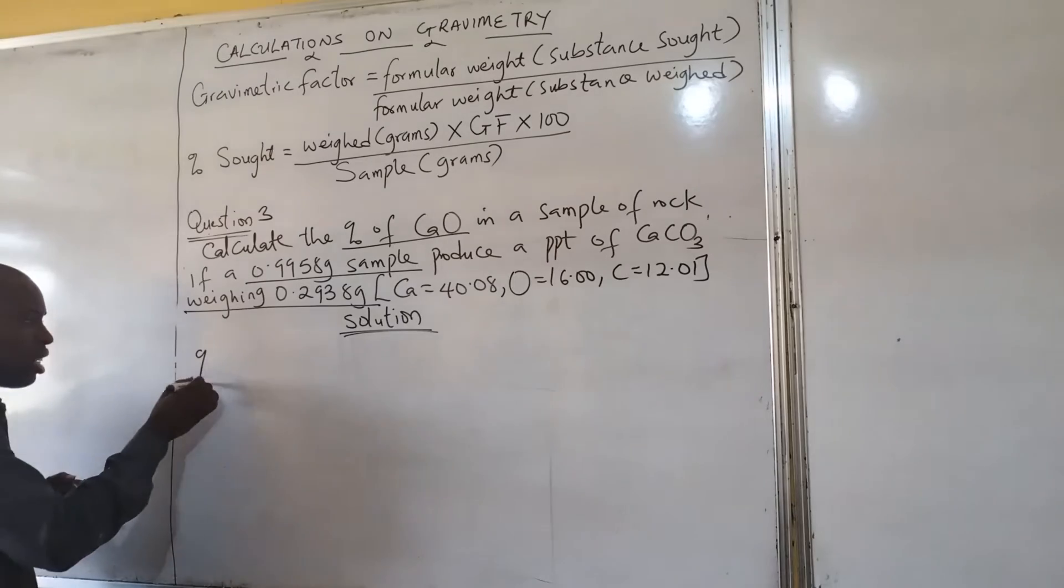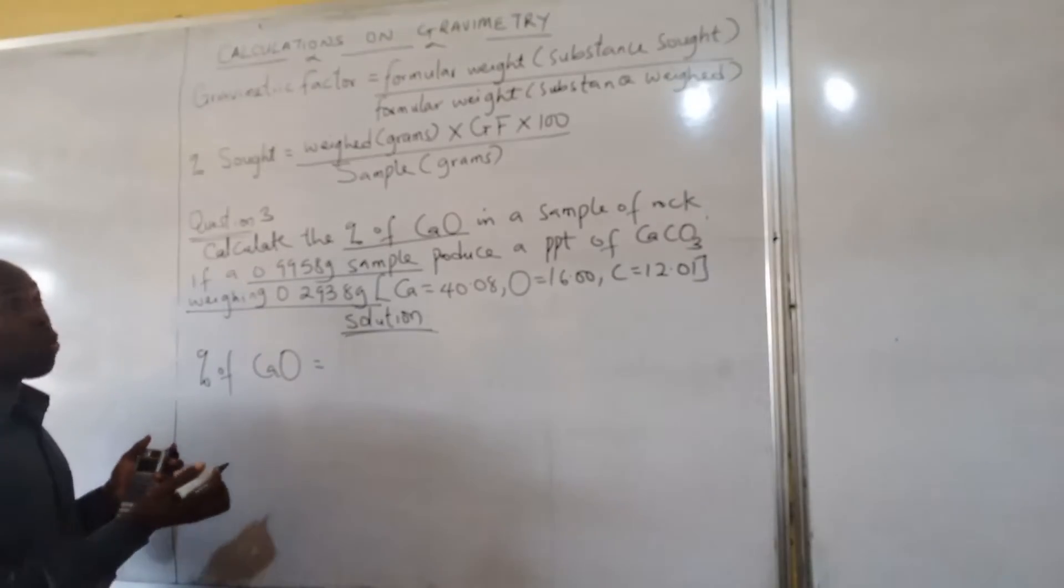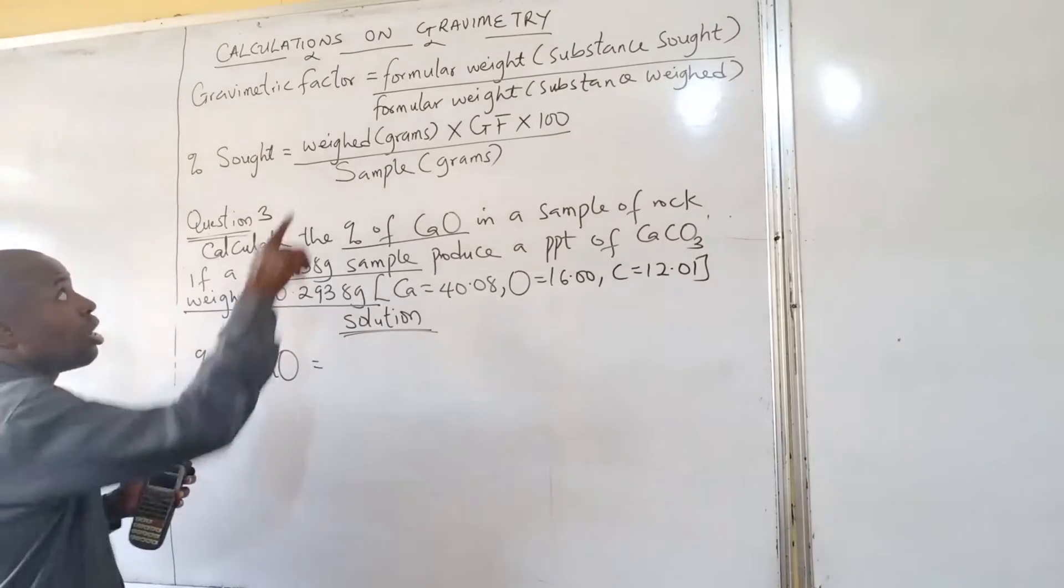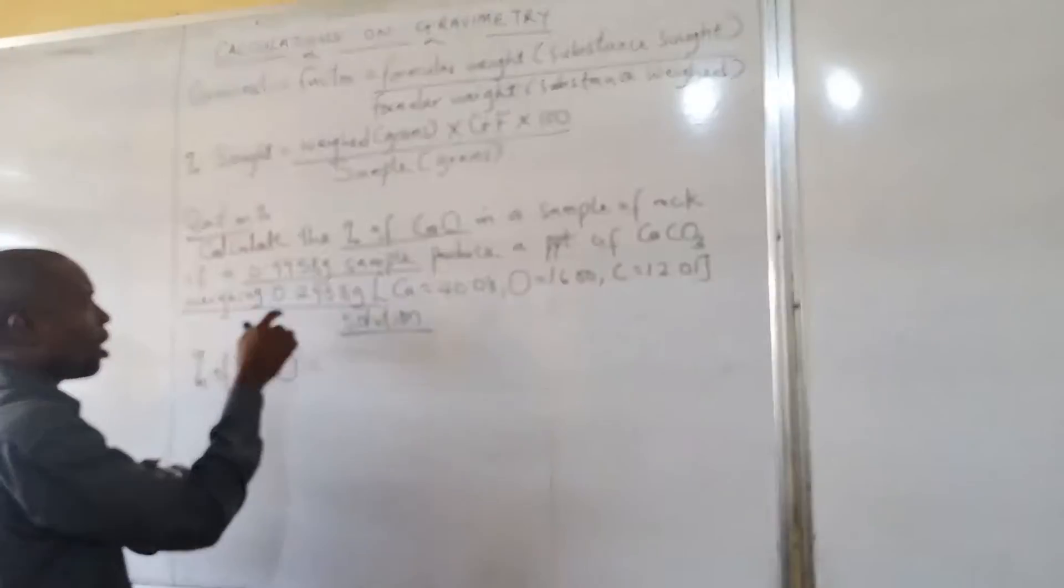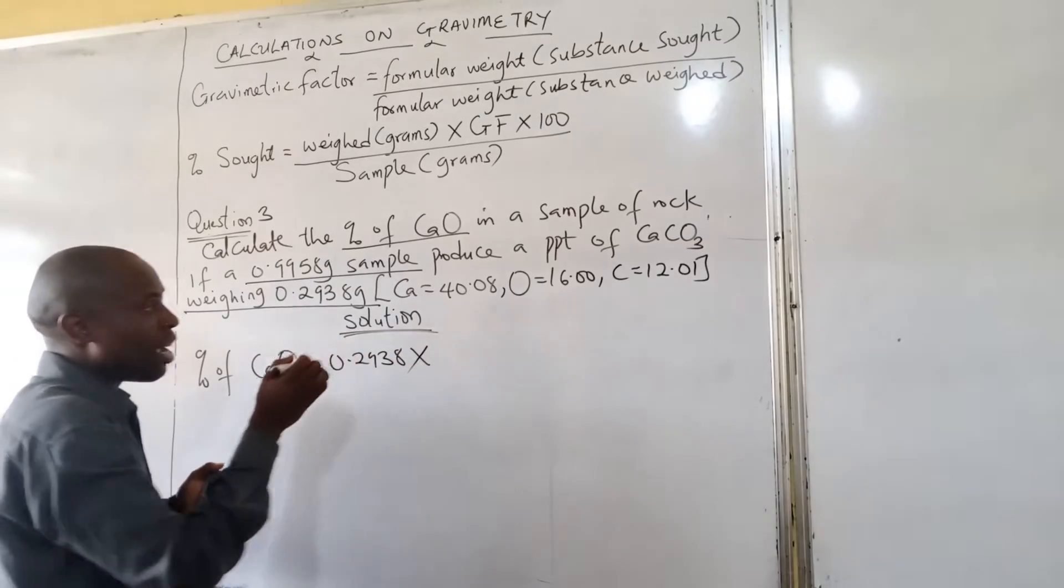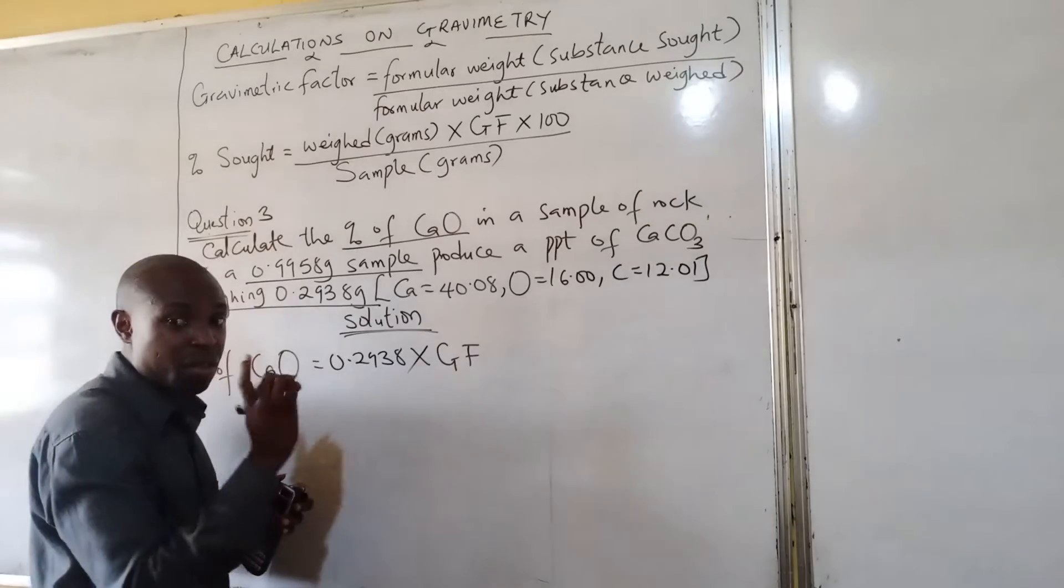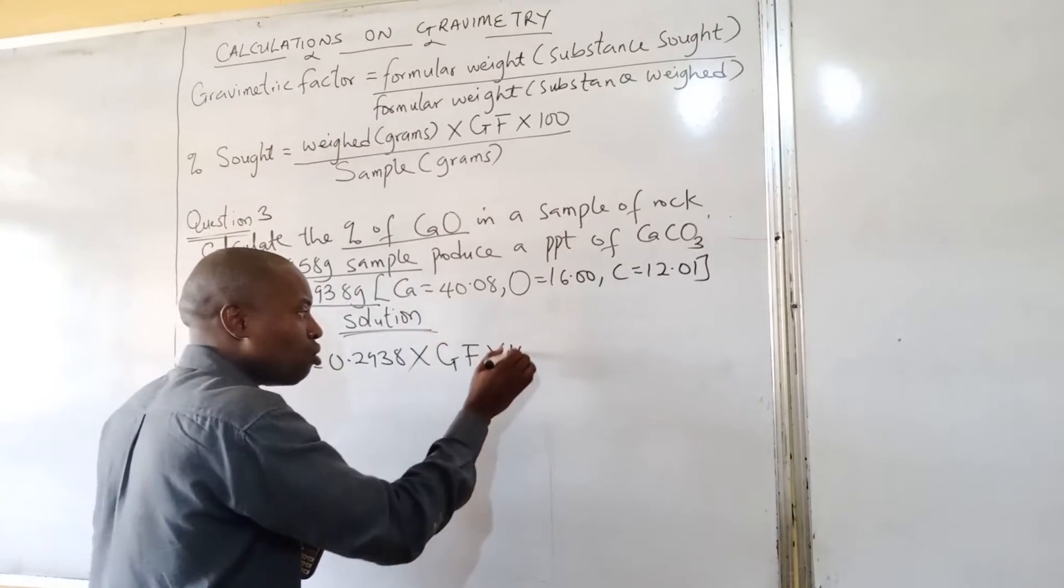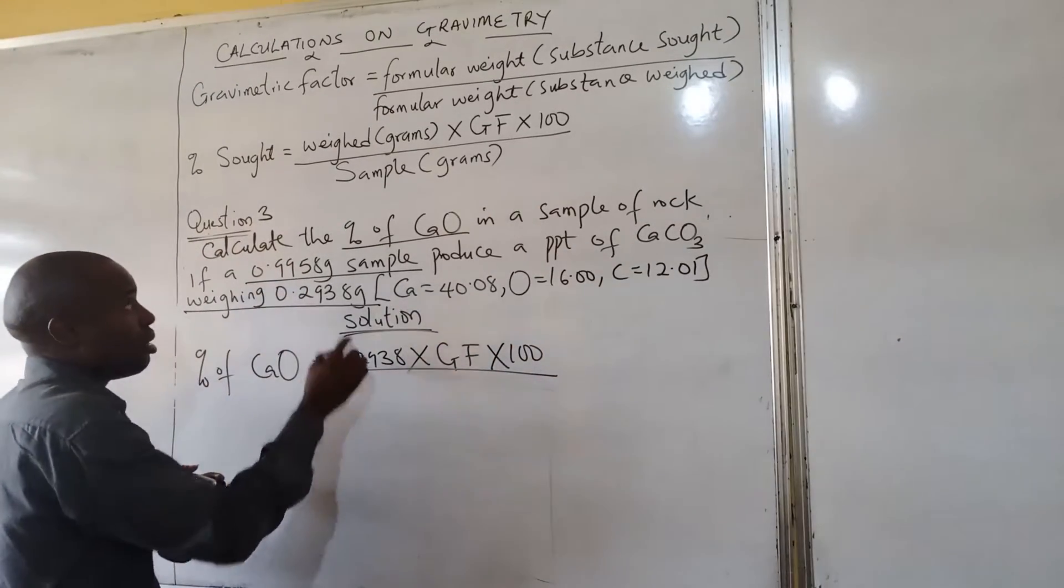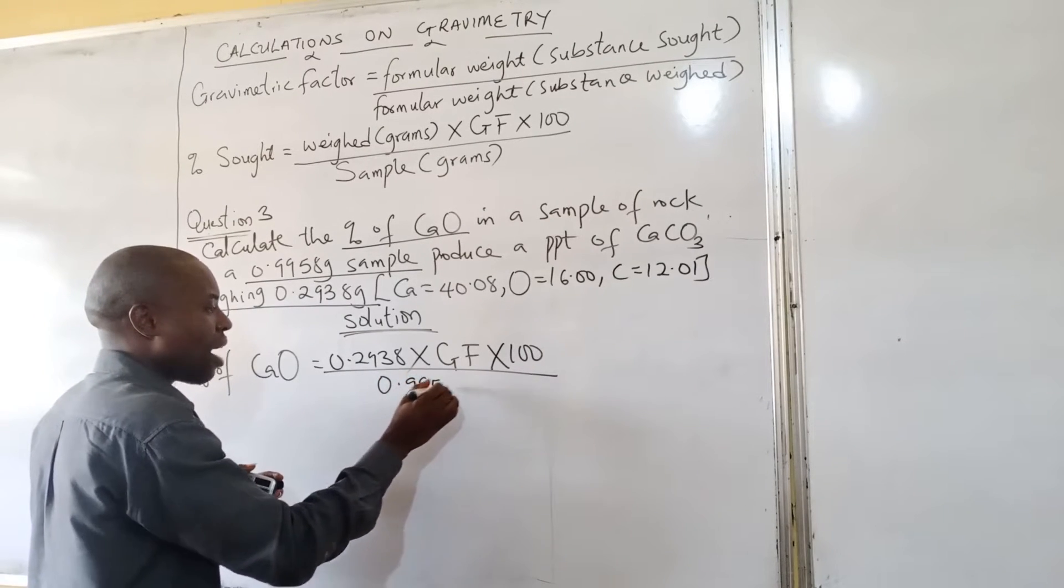Now, you are aware that the percentage of calcium oxide, the formula that we are speaking of, formula gravimetry, is that the weight there is 0.2938 multiplied by the gravimetry factor, which I will determine from the data given to me, multiplied by 100 over the sample, which is 0.9958.